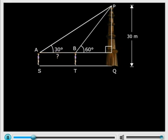Now look at the figure carefully. If we know AR and BR, we can find AB, because AB is AR minus BR. So that's exactly what we will do.